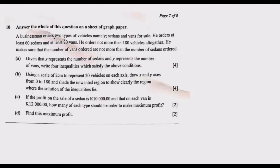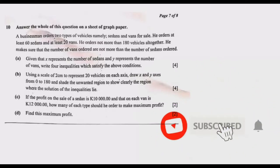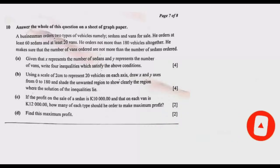Welcome to today's episode. We are looking at question 10 from the 2021 GCE Mathematics Paper 2. Question 10 is from linear programming — one of the easiest questions in an exam. This question is always there, so if you understand the principles, it's a guaranteed mark. I would encourage you to always select it. This question is always in Section B, and it requires you to answer on a sheet of graph paper.